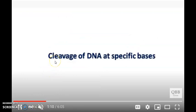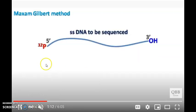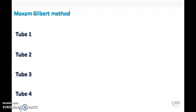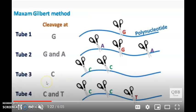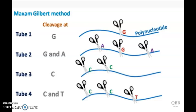The next step involves cleavage of DNA at specific bases. For this purpose, the polynucleotide chain is divided into four tubes. Each tube will have reagents that will cleave the polynucleotide chain at a specific site. These include G, G and A, C, and C and T.